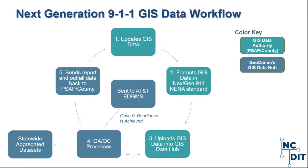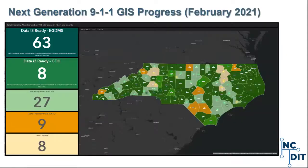This is a status update map of the Next Generation 911 GIS project progress throughout the state, screen-grabbed on February 11th. We now have a total of 74 counties or PSAPs that are I3-ready. The dark green designations mean the data has reached I3 readiness — the initial stage is to reach that in the GIS Data Hub, and once complete it eventually transfers over to the EDGMS. Sometimes things sit within the GDH for a little bit due to scheduling.